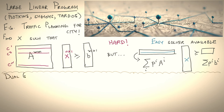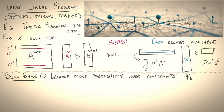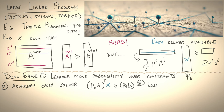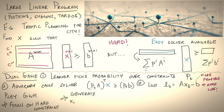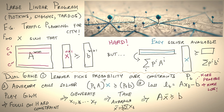To turn this easy solver into a solution for the hard problem, we apply the dual game strategy. Step one: the learner picks a probability over constraints p_t. The adversary calls the solver, ensuring p_t times A transpose x is greater than or equal to p_t times b. Finally, we define the loss as A — so more feasible the constraints, more the loss. Things are backwards here. Our strategy is to play GWM, which focuses on hard constraints, resulting in a set of x_1, x_2, ..., x_T that the adversary plays. The claim is that the average x̄ satisfies A x̄ ≥ b minus delta — the hard problem is solved.